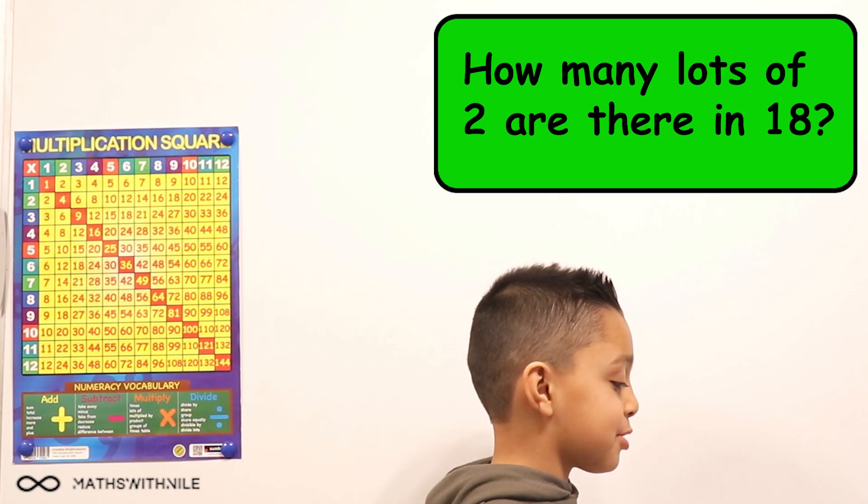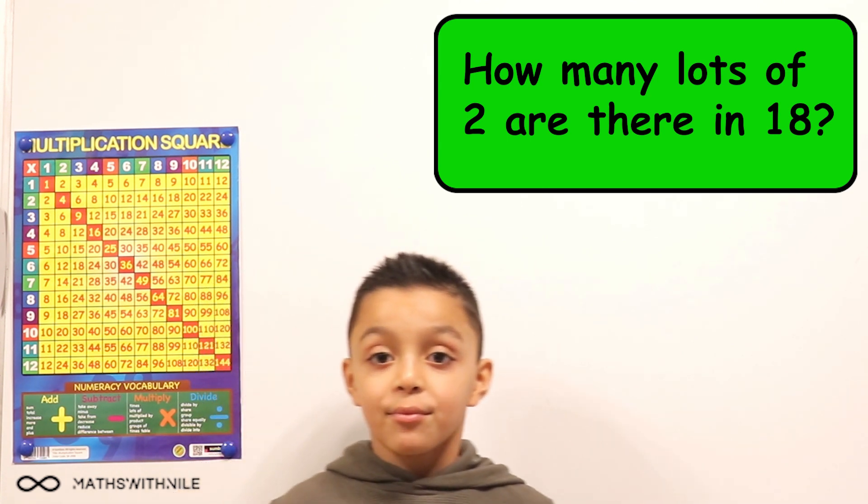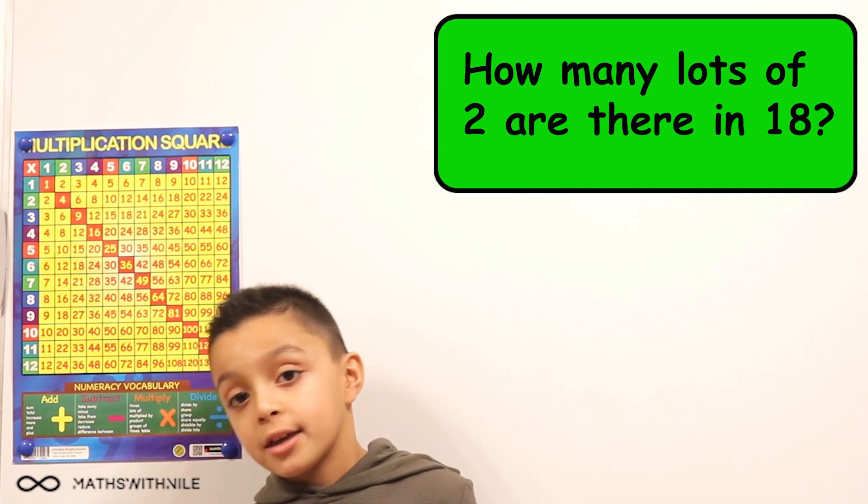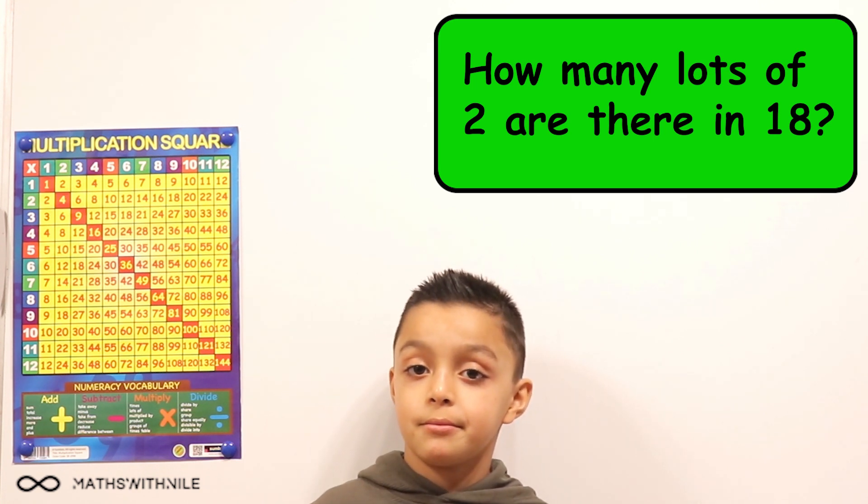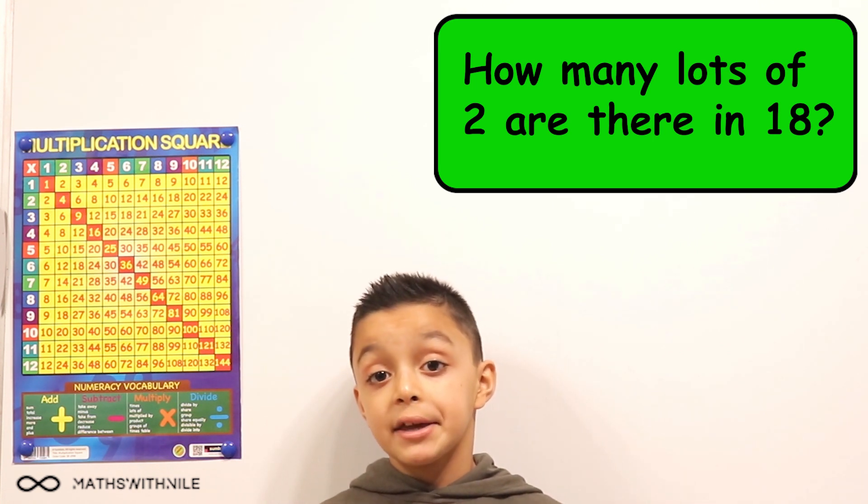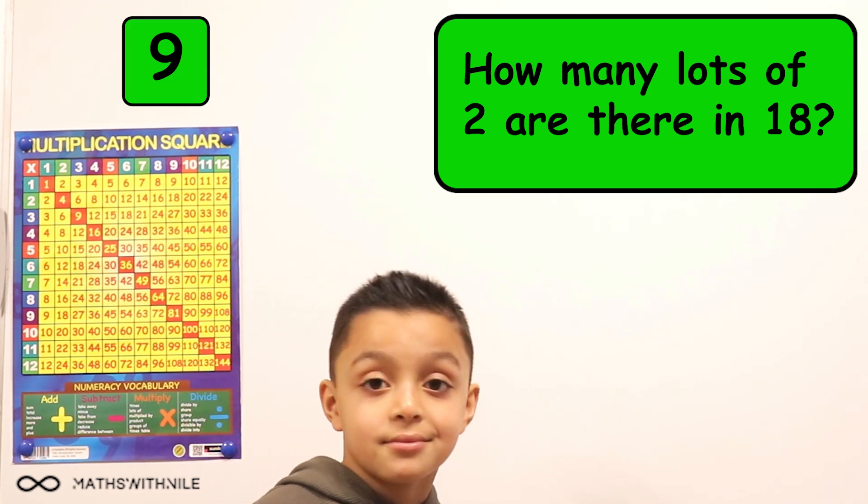How many lots of two are in 18? Okay, so how are you going to work this out? Well, there's multiple ways. I find the easiest way is to half it. Okay. So half of 18 equals nine. Okay, nine is correct.